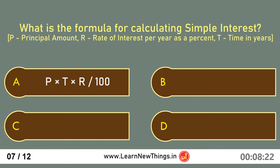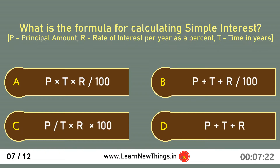What is the formula for calculating simple interest? P into T into R by 100, i.e., PTR/100.